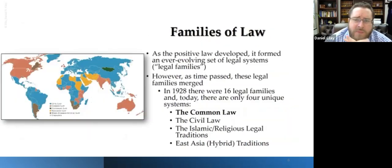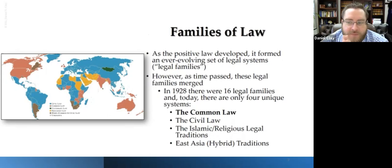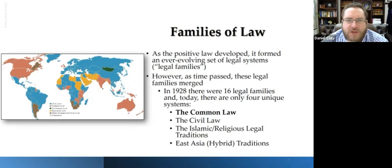That brings us to positive law. Positive law has developed over time and also geographically. As it's developed, it's formed a set of ever-evolving legal systems, also called families of law. Before we were all interconnected, you basically had regions where you just practiced some kind of tradition of law, some kind of judicial system, formed based upon the little region you lived in — everybody the same religion or ethnicity, interpreting holy Bibles and the Quran in different ways. That's what worked for that region.